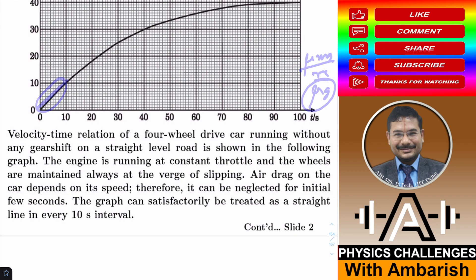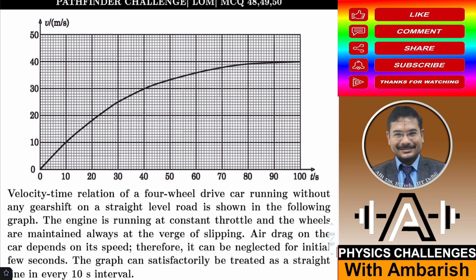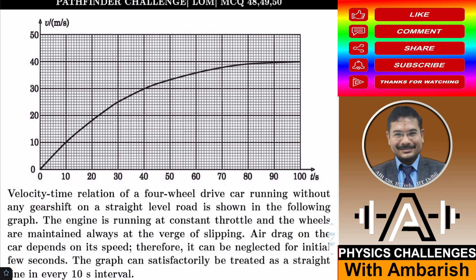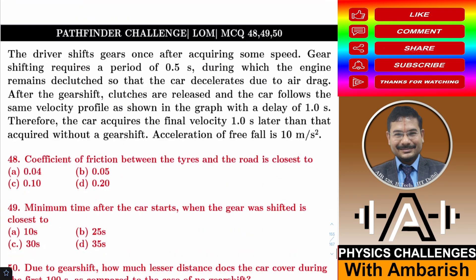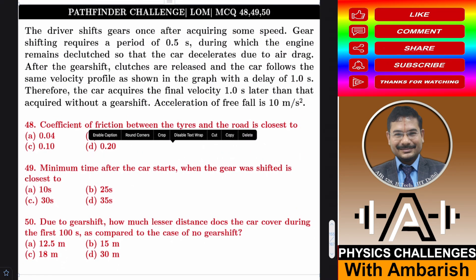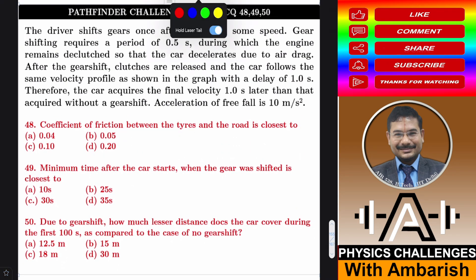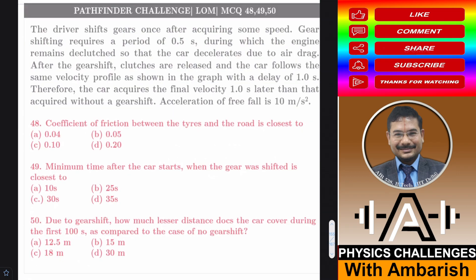The slope of the V-T graph is μg. From the graph, the slope is 1 m/s² initially. So μg = 1, which gives μ = 0.1. That is option C.